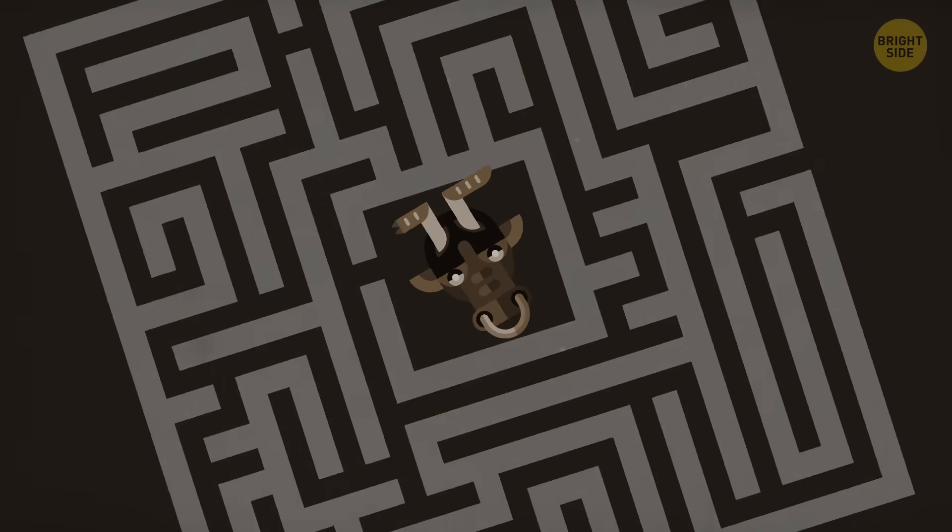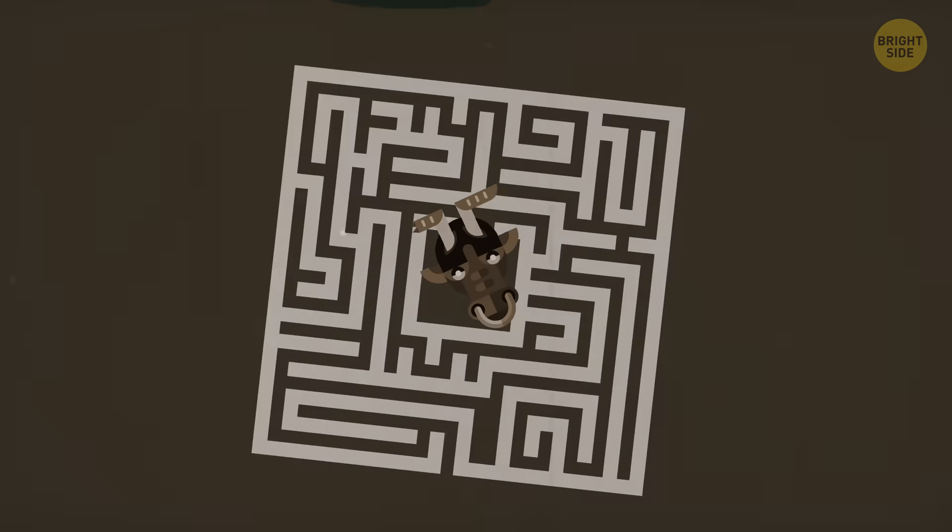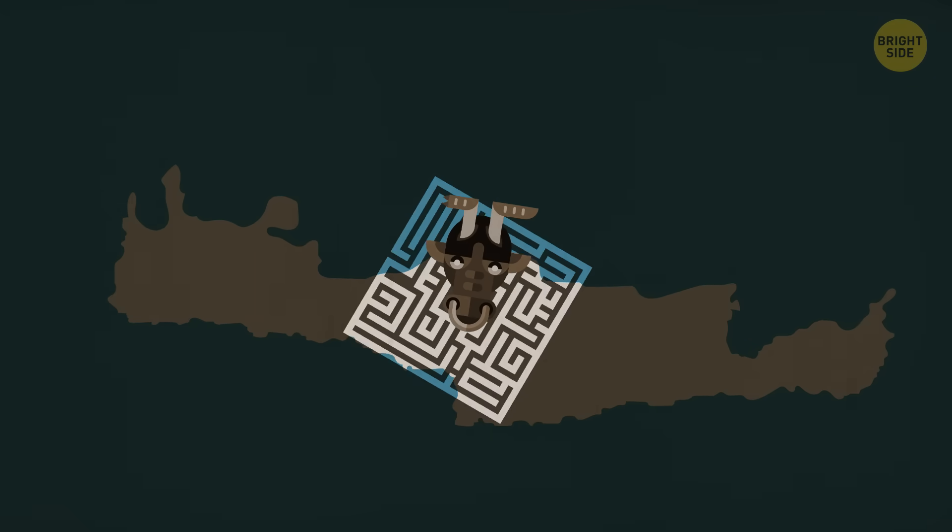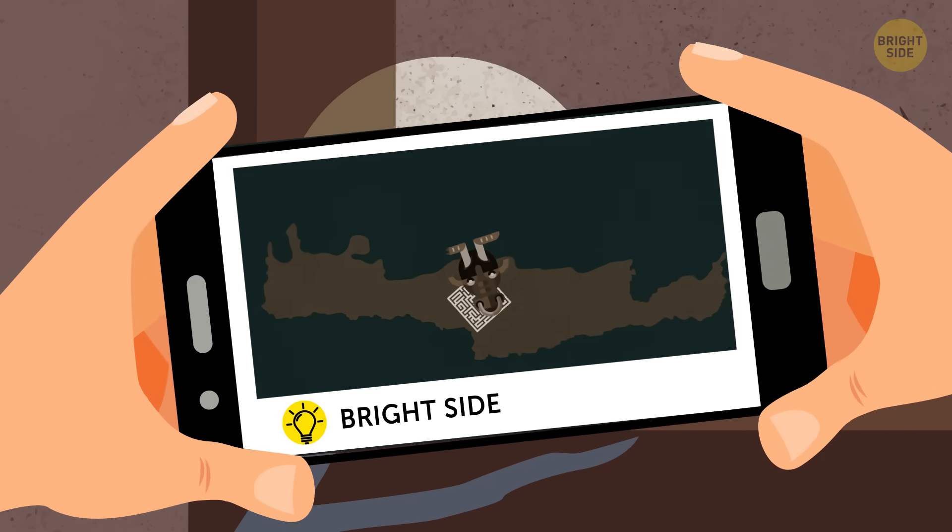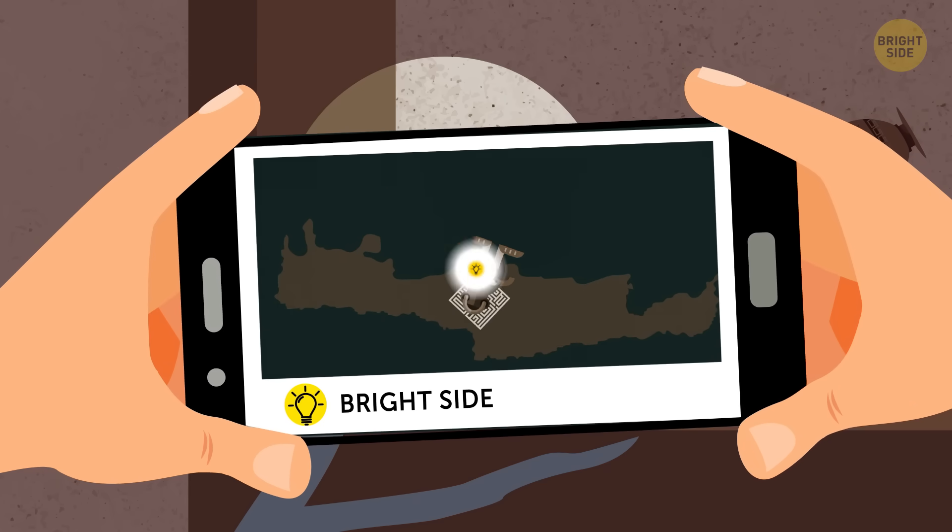People used to get lost in Crete, sometimes for years. Historians blamed the island's famous labyrinth, a huge maze that still exists today. But any brightsider knows, they were just looking for the facilities.